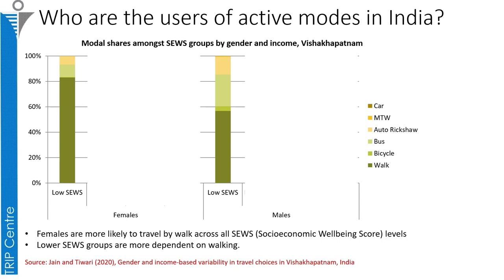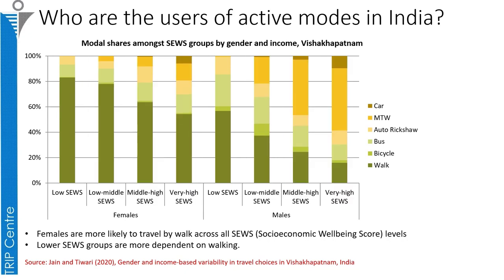The active mobility share in Indian cities is high. However, there is a disparity in travel choices by both income and gender. Within the same socio-economic levels, females are more dependent on active modes, particularly walking, than males. As income level increases for both females and males, the dependency on walking and bicycling changes. Also, the disparity between females and males increases with respect to the socio-economic well-being score.